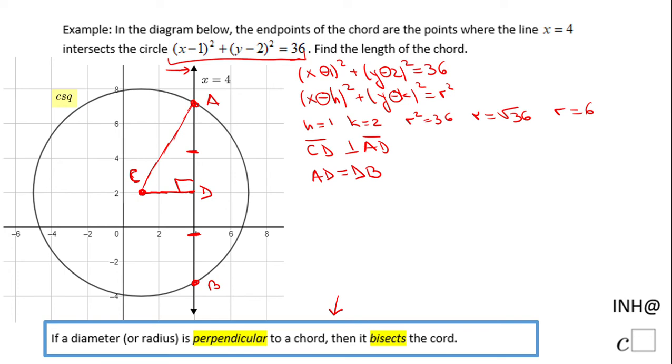We're going to look at triangle CDA, which I'm going to draw here. Notice that CA is the radius of 6, which we found earlier.